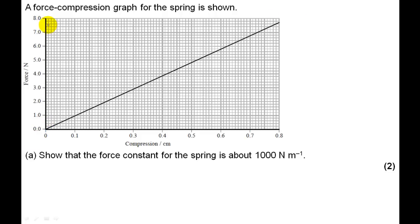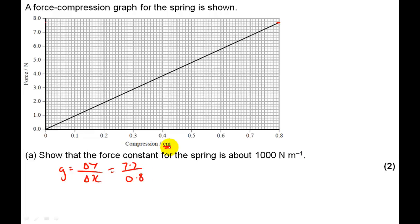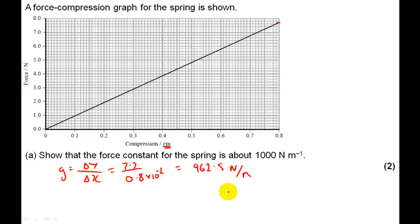The easiest and most accurate way is to read off a point since it's a straight line from the origin. Reading off at 0.8 cm gives about 7.7 N. Gradient equals delta y over delta x: 7.7 divided by 0.8. A common mistake is forgetting to convert centimeters to meters, so dividing 0.8 by 100 gives 0.008 m. Calculating gives 962.5 newtons per meter — that's enough for both marks.